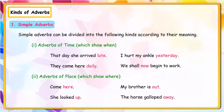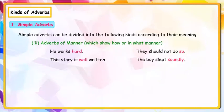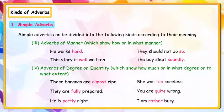Adverbs of place, which show where: Come here; My brother is out; She looked up; The horse galloped away. Adverbs of manner, which show how or in what manner: He works hard; They should not do so; This story is well written; The boy slept soundly.